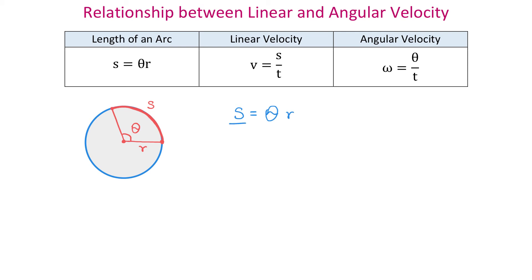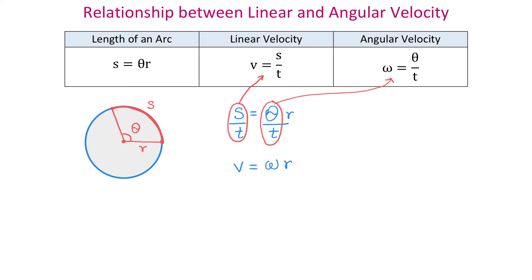To form the relationship between linear and angular velocity, I start by writing s equals theta times r. Dividing both sides by t, the left side becomes s over t, which represents linear velocity, so we replace it with v. On the right side, theta over t represents angular velocity, so we replace it with omega and bring down r. This gives us the formula v equals omega times r, which represents the relation between linear and angular velocity.